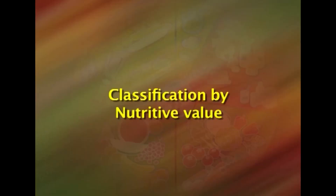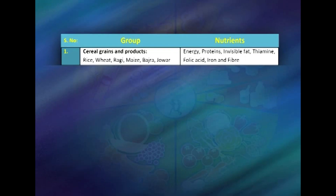The final classification of food is based on nutritive value, with five basic food groups. The first group is cereals and their products, which includes rice, wheat, ragi, maize, bajra, and jawar. The main nutrients from cereals are energy, proteins, invisible fat, certain amounts of fiber, and B complex vitamins.